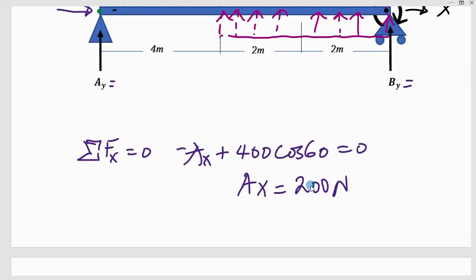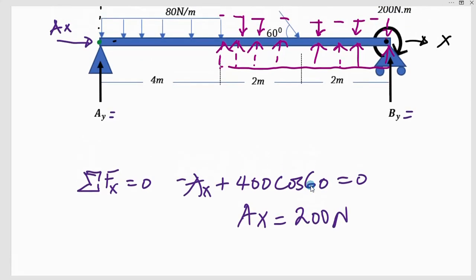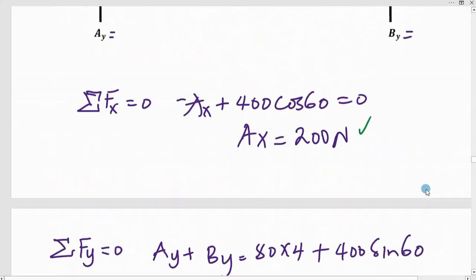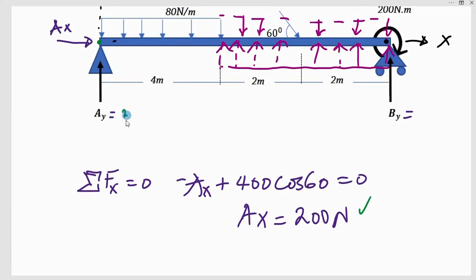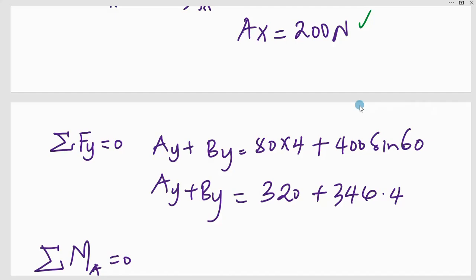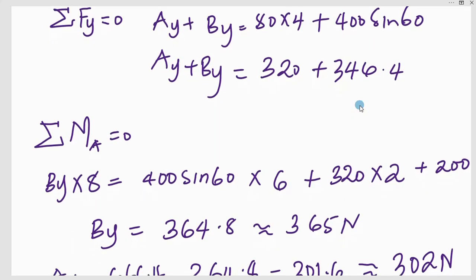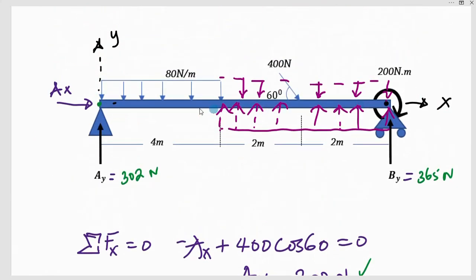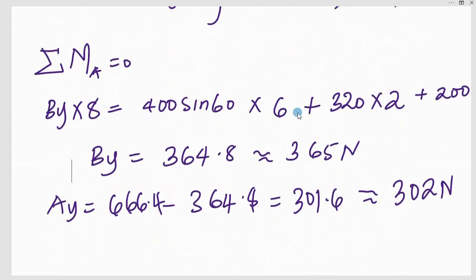Applying equilibrium conditions, I have found that AX equals 100 newtons, BY equals 365 newtons, and AY equals 302 newtons. Applying the sum of forces in the vertical direction, horizontal direction, and taking moments — all three equations give you the unknown reactions at the supports for a statically determinate beam.